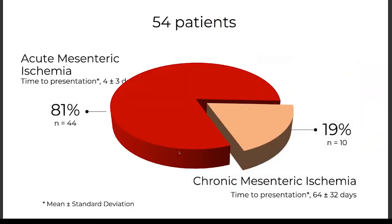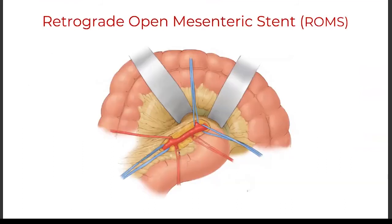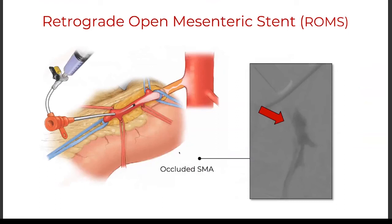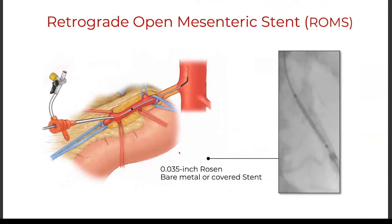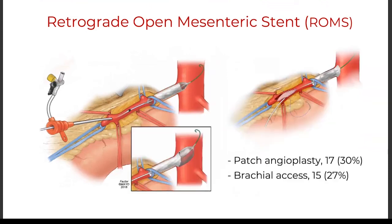For the ROMS technique: control the vessels, puncture across the lesion with a wire, confirm you are in the true lumen, then deploy a bare-metal or covered stent — avoid covered stent if there is contamination. My tip: at the end, flush the sheath multiple times and don't hesitate to open the arteriotomy and look inside, because I found residual thrombus inside in more than one case — that is a cause of early failure. Open the arteriotomy, remove thrombus, use the balloon for proximal control, and close over a patch — I like to use a bovine pericardial patch.